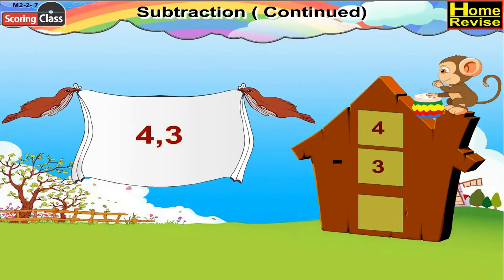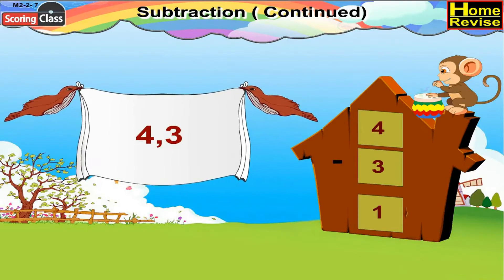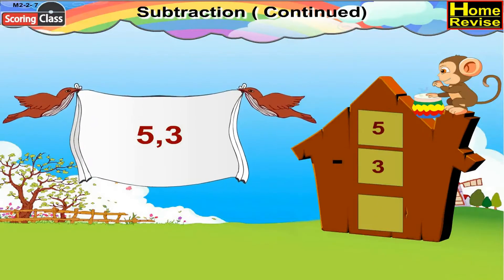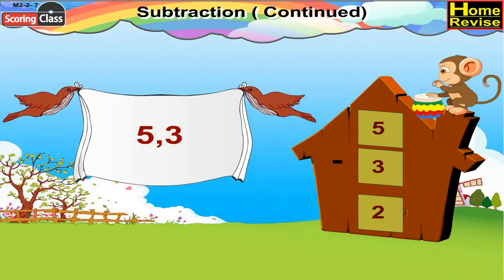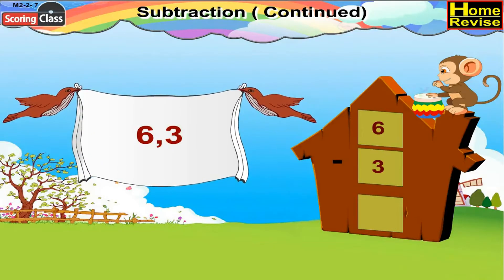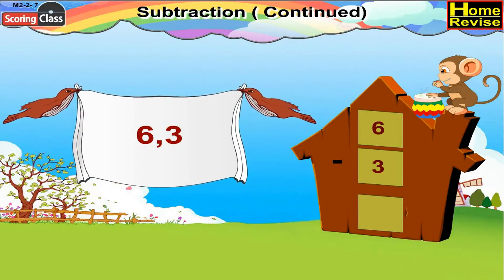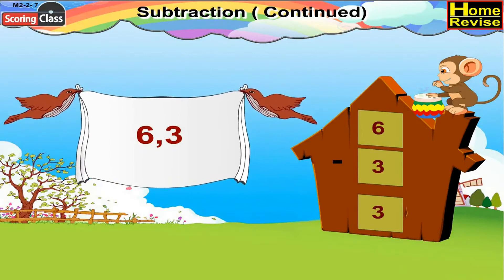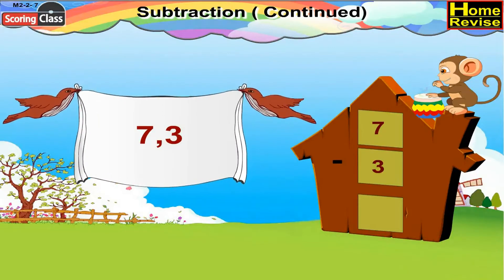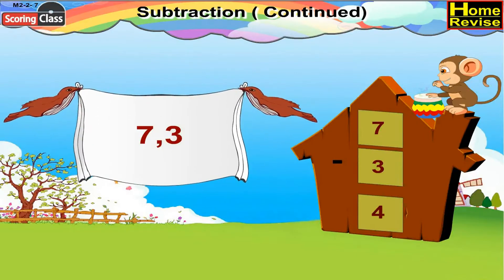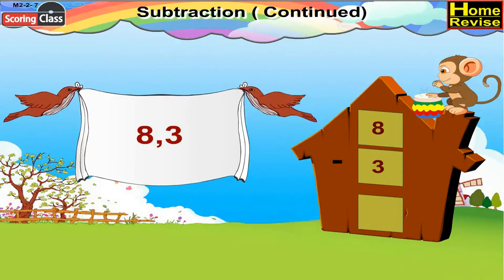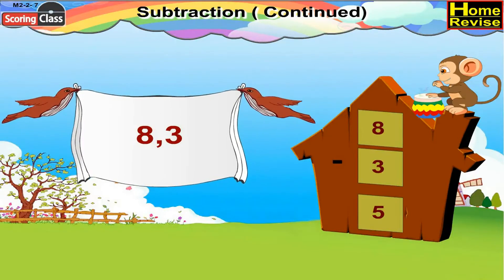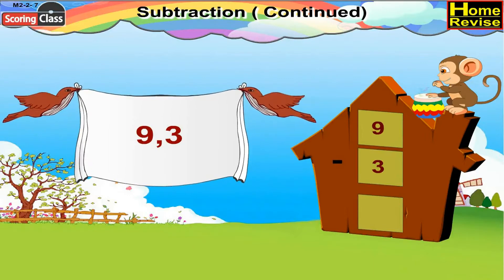Four minus three is one. How about five minus three? Five minus three is two. Six minus three is three. What about seven minus three? You're right — seven minus three is four. Eight minus three is five. Nine minus three is six.